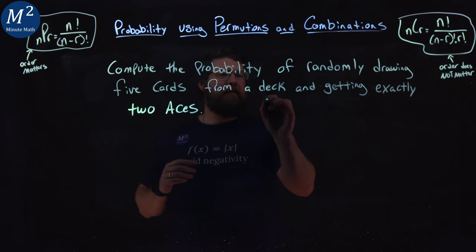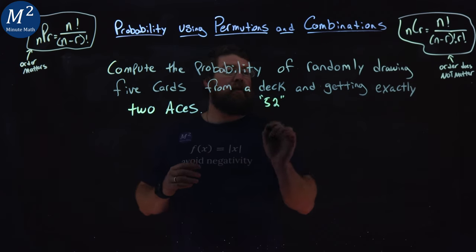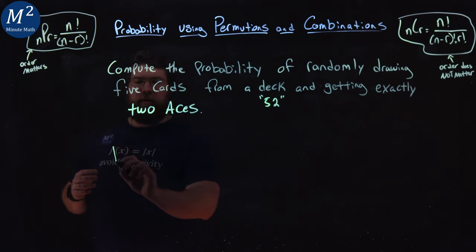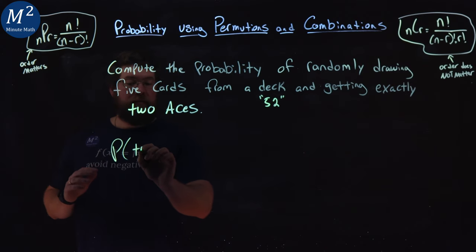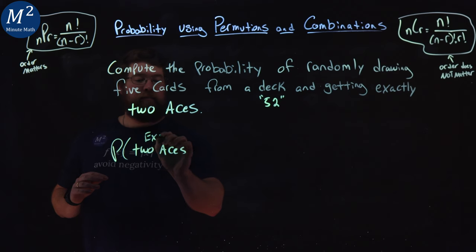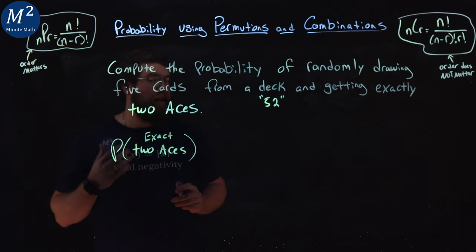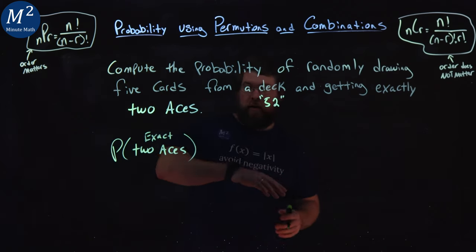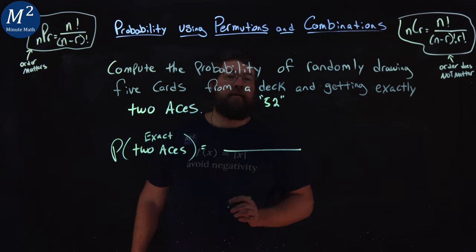A deck of cards has 52 cards in it. So if we talk about the probability of getting exactly two aces, exactly two, because we can't have one, we can't have three, it has to be exactly two aces.